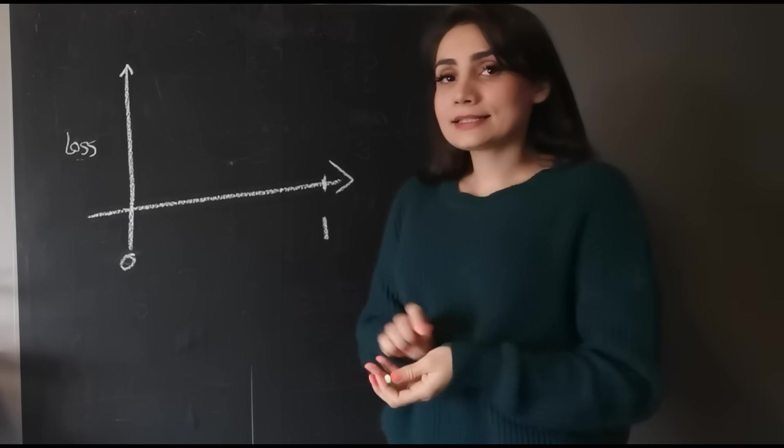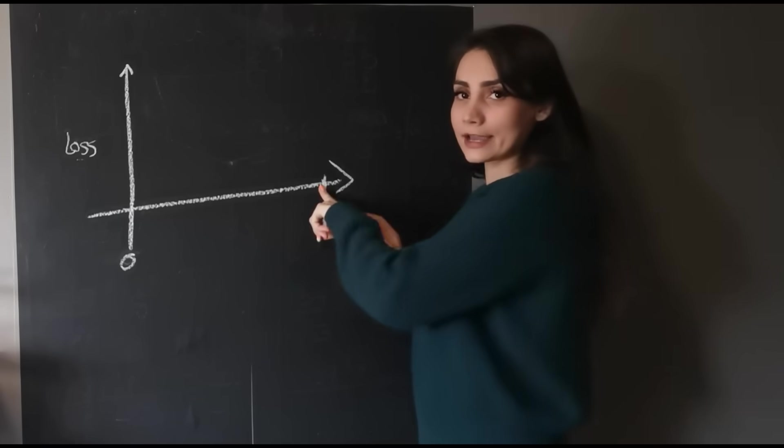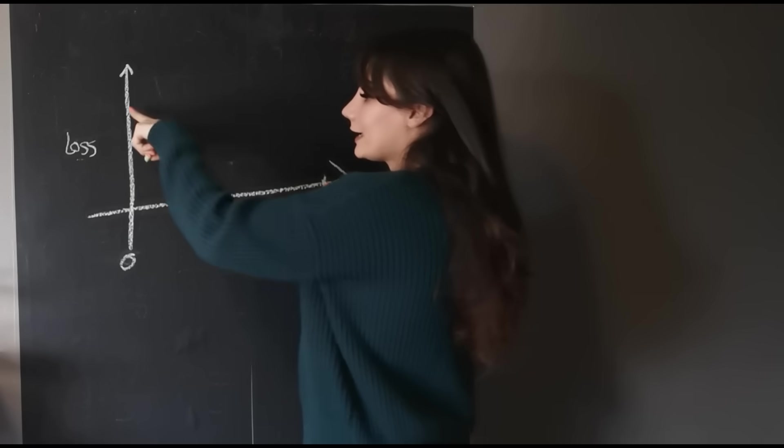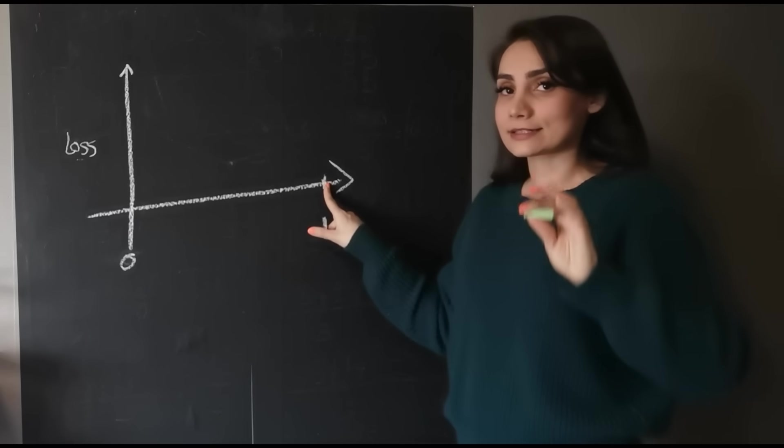So that means that when I'm closer to one, my loss has to be at the lowest level. When I am closer to zero, my loss has to be at the absolute highest level.